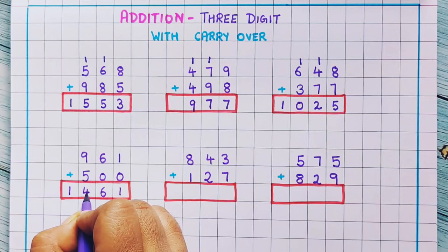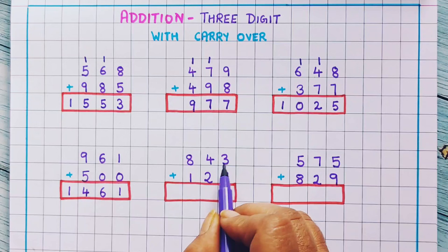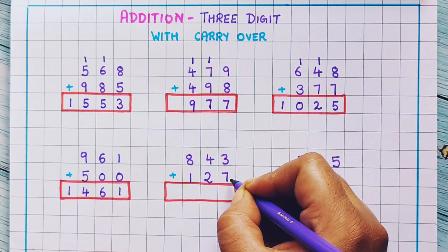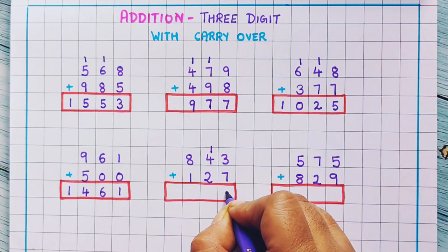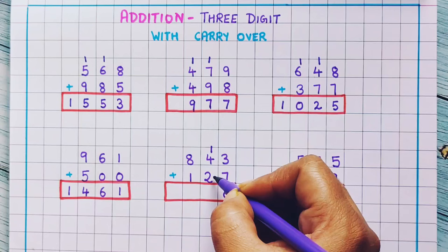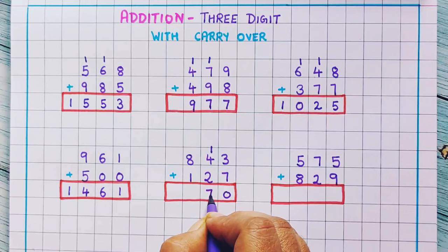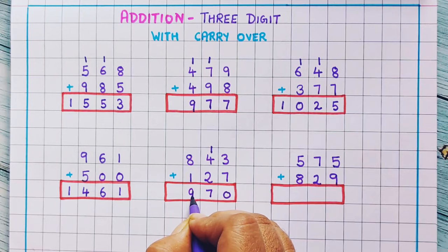Next one: 843 plus 127. Now 3 plus 7 is 10, so I will write 1 here as carryover and 0 here. Now 1 plus 4 plus 2: 4 plus 2 is 6, plus 1 is 7, so I will write 7. And then 8 plus 1 is 9, so I will write 9. The answer is 970.